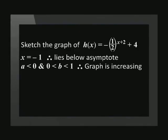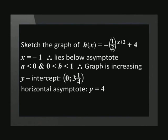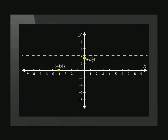Let's take a moment to look at all of the information we've gathered before plotting the graph. The graph lies below the asymptote and is increasing. The y-intercept is (0, 3¼), the horizontal asymptote is y equals 4, and the x-intercept is (negative 4, 0). We plot the horizontal asymptote y equals 4 and mark our x and y-intercepts. Since the graph lies below the asymptote and is an increasing function, we can sketch it in. It is a good idea to learn the steps in sketching an exponential function — the more you practice, the better you will get.